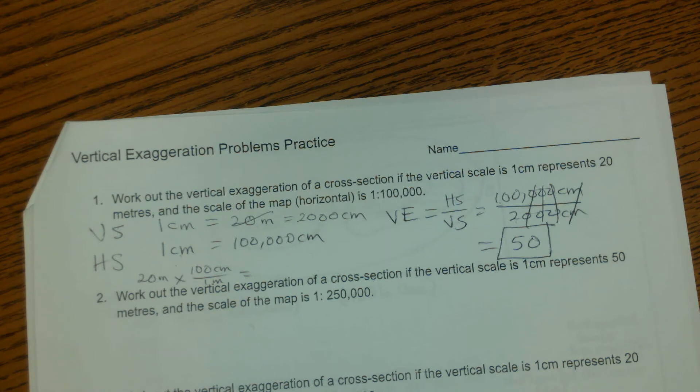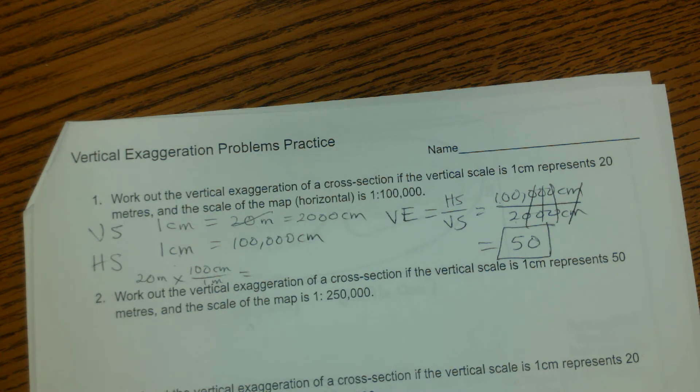And it's important to remember that vertical exaggeration is always going to be a bigger number, bigger than 1. So if you get a decimal or a fraction, you know you've done it the wrong way. If you get a positive number, chances are good that you've gotten it correct.